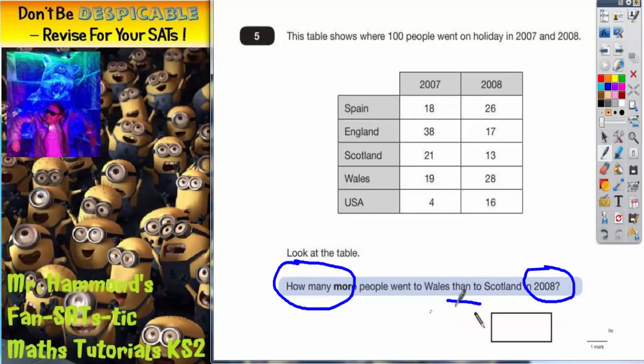So we're interested in Wales and Scotland for 2008. Wales in 2008 was 28 people and Scotland in 2008 was 13 people. I'm just going to write these there, so Wales 28, Scotland 13.